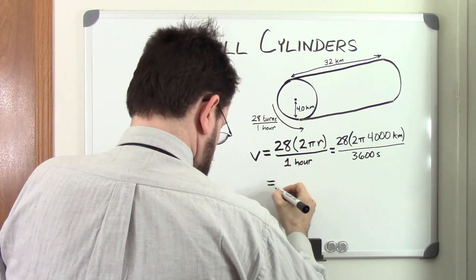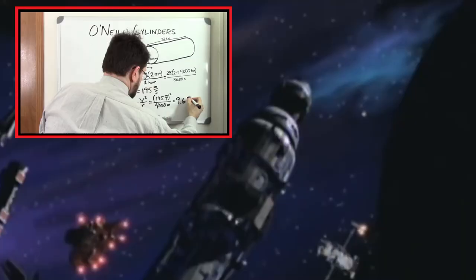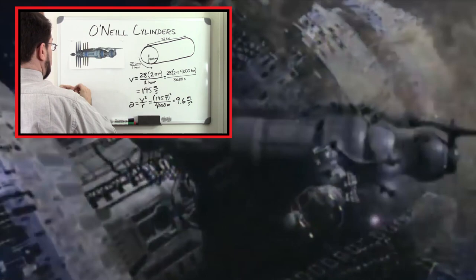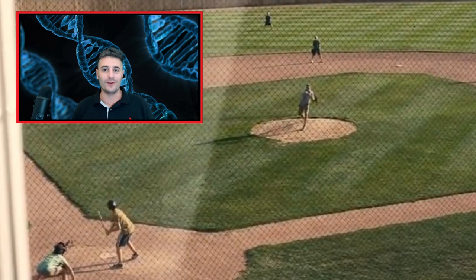O'Neill's original proposal was for a cylinder 5 miles in diameter and 20 miles long, rotating about once every 2 minutes. The science fiction TV series Babylon 5 was set in an O'Neill Cylinder, though they never called it that in the show. The movie Interstellar also has an O'Neill Cylinder orbiting Saturn. It's called Cooper Station and it looks beautiful.